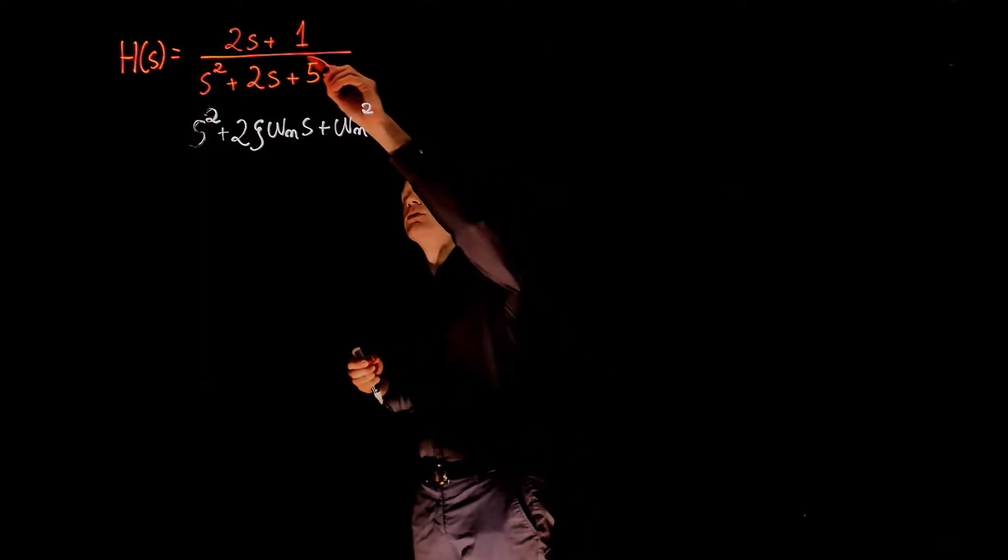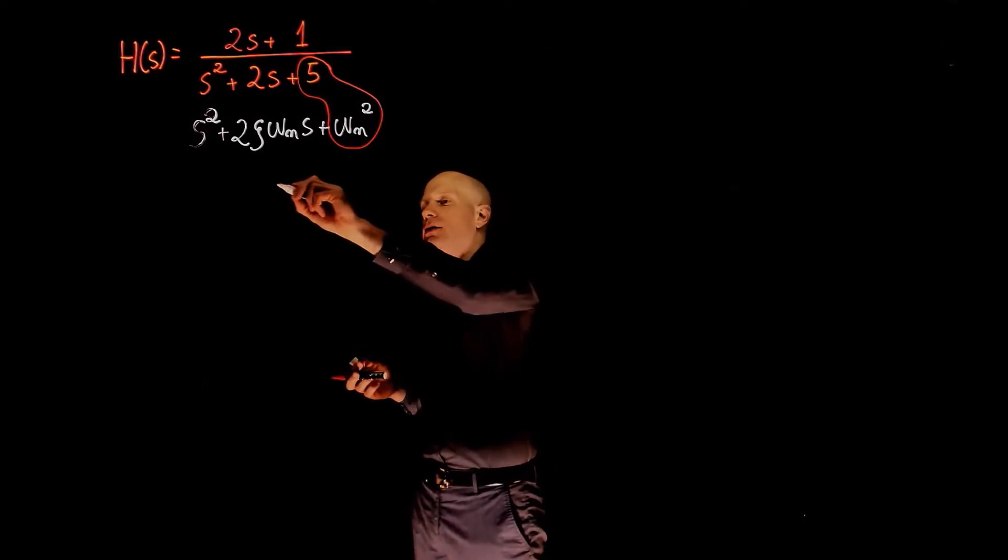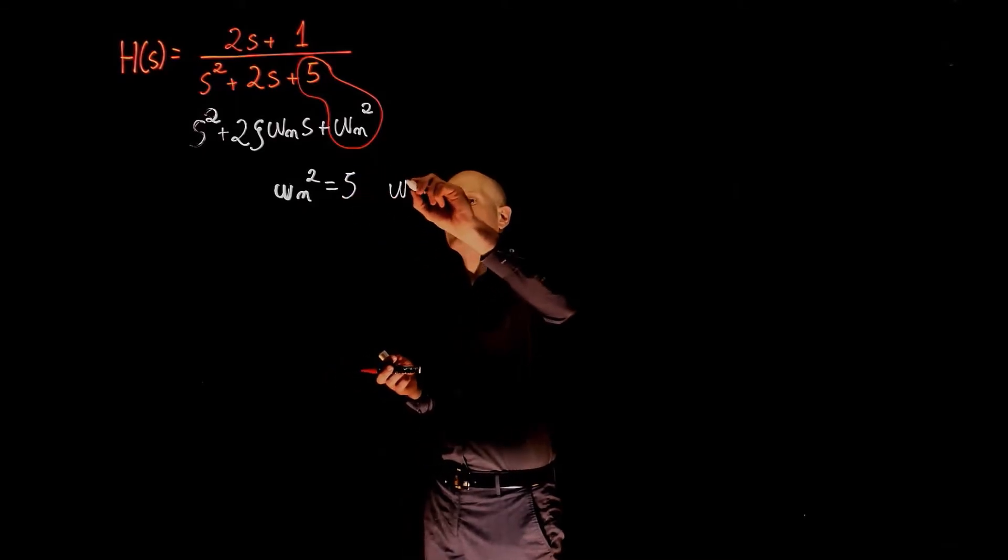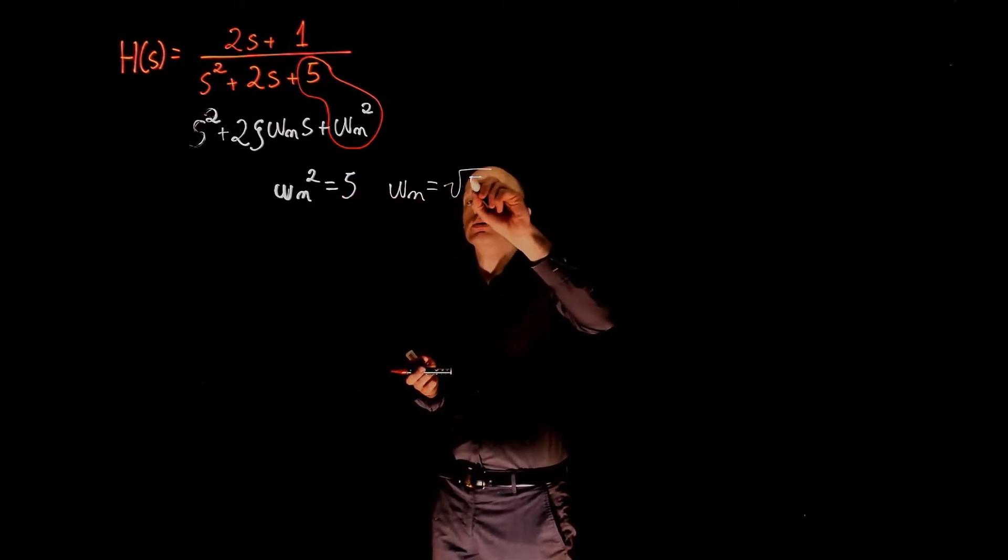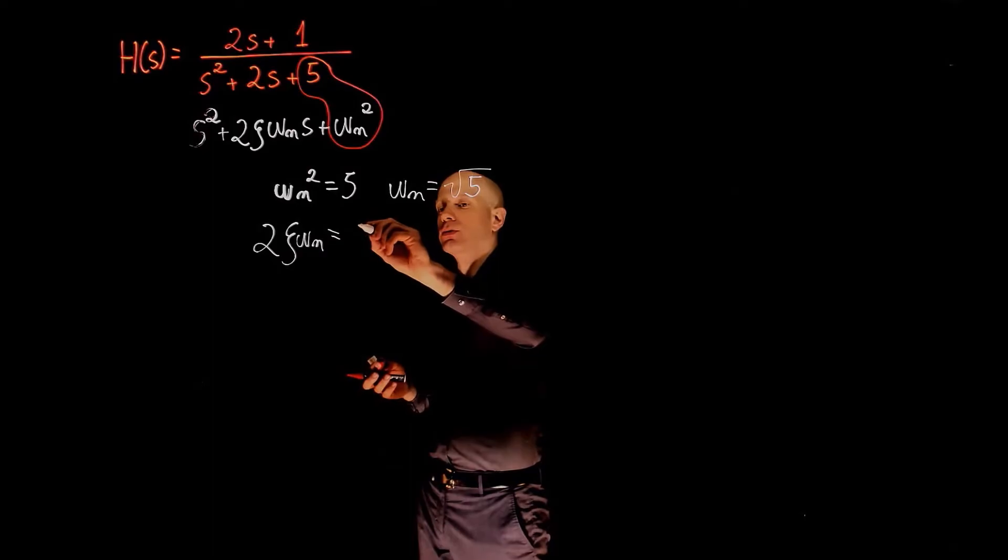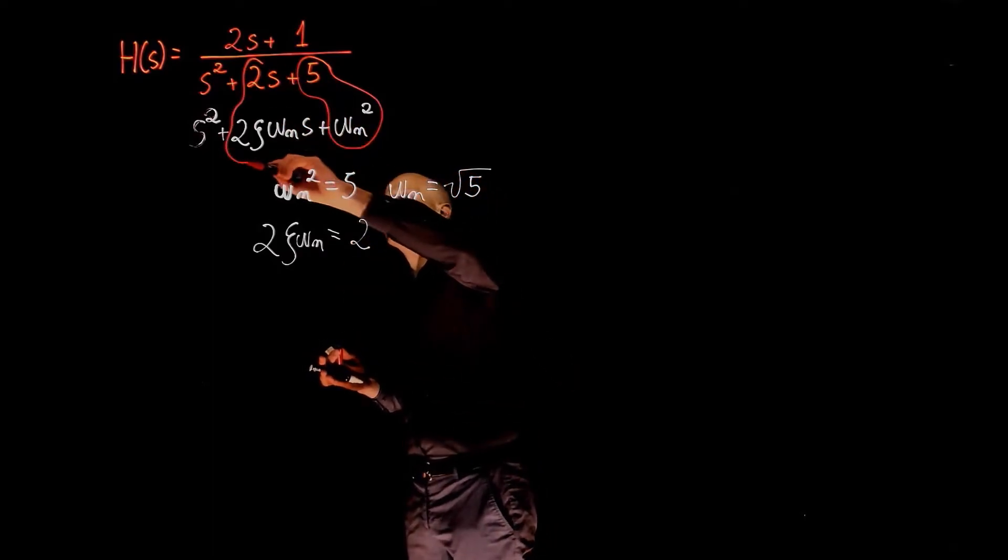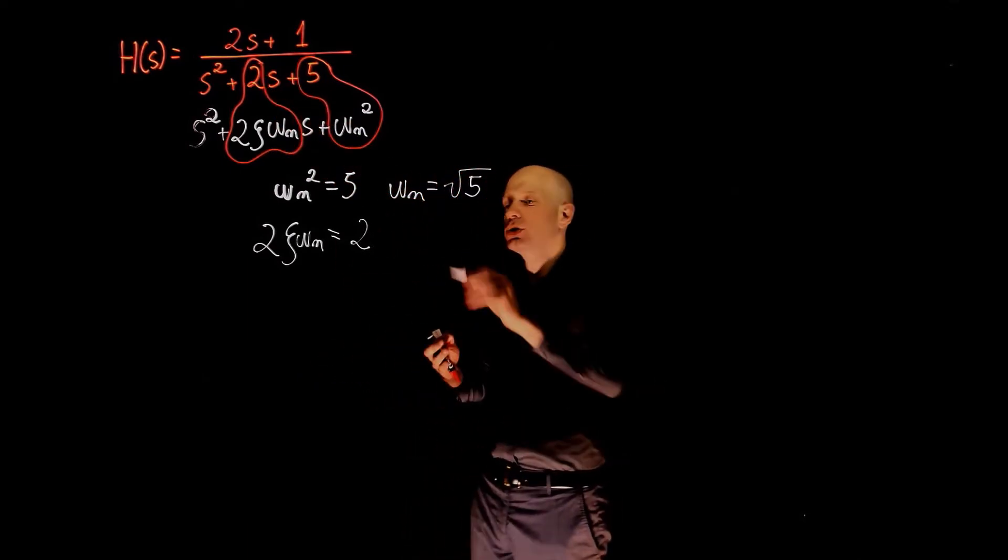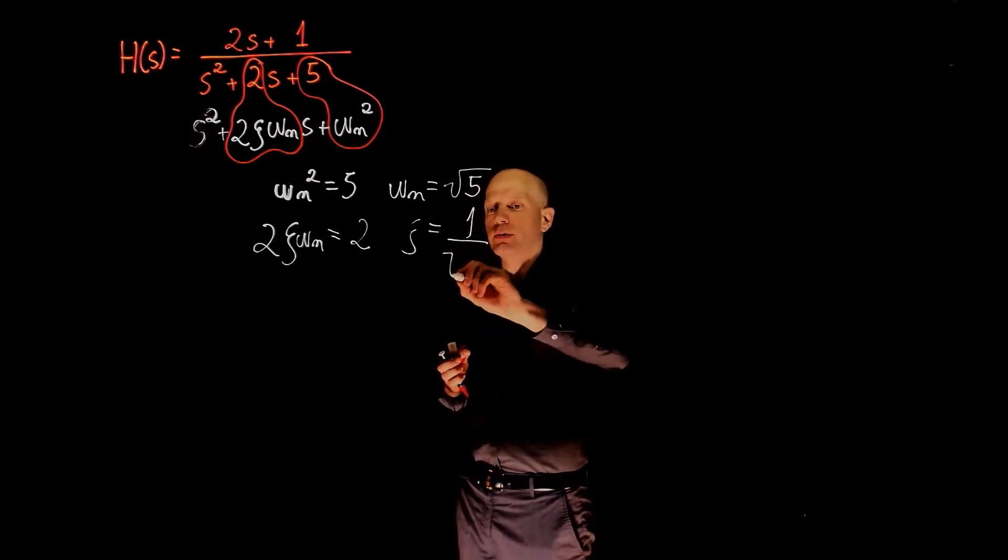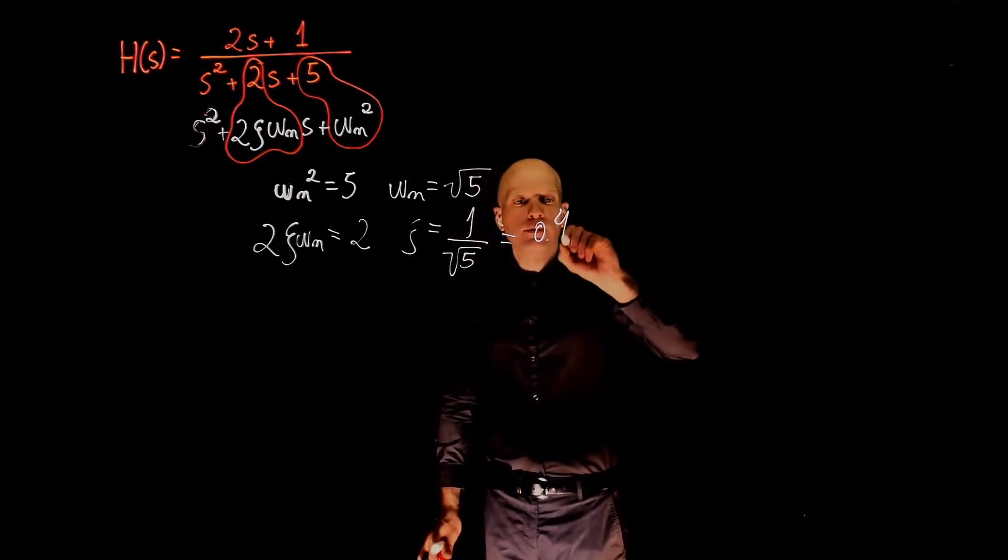By equating now the coefficients of s, we can find omega n and zeta. Omega n squared equals to 5, which gives omega n as square root of 5. 2 zeta omega n equals to 2, by equating the coefficients of s here, which gives zeta as 1 over square root of 5, and this is 0.44.